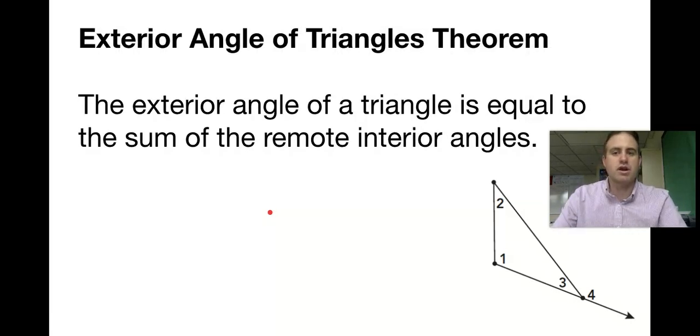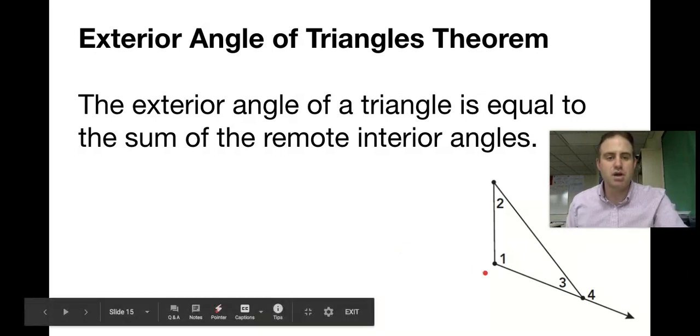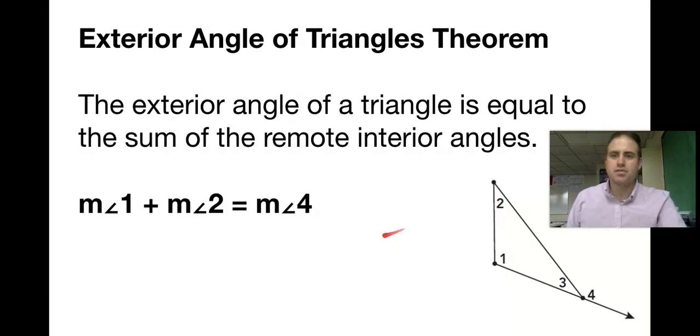The exterior angle theorem states that the exterior angle of a triangle is equal to the sum of the remote interior angles. So angle four equals the sum of angles one and two. That's what our theorem says: m∠1 + m∠2 = m∠4.